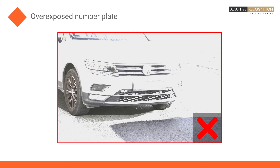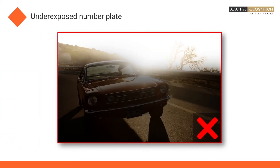A similar problem may occur if the sunlight comes from directly behind the car, causing so strong a darkening effect on the car that the plate is shadowed or can't be seen.